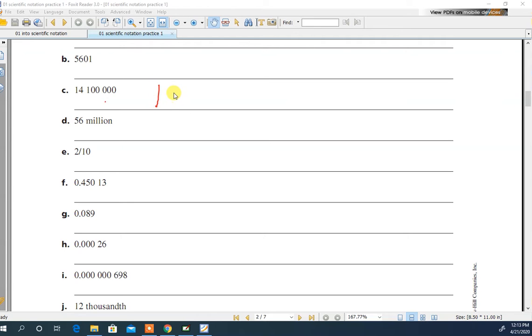So let's wrap up 14,100,000. So the first thing I want you to tell me is just, what would the number part of it look like without the 10 to the whatever? Just the number part is going to be 1.41. And now, what is the exponent part of this going to be? Well, let me count. Exponent part is going to be a 7.